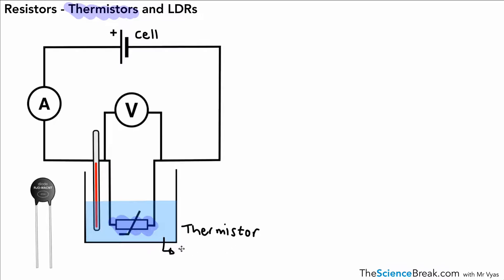The thermistor is in some water. We've got a thermometer in the water—we would call that a water bath. That water should be able to vary in temperature, so there might also be a heater of some sort in there.